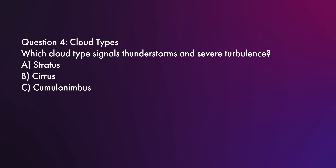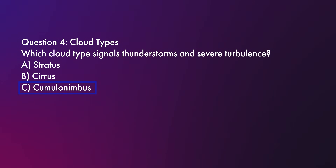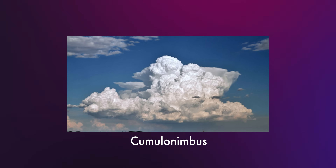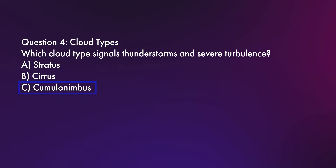Question four: What cloud type signals thunderstorms and severe turbulence? Is it A, stratus; B, cirrus; or C, cumulonimbus? The correct answer is C, cumulonimbus. Cumulonimbus clouds are tall, dense clouds often associated with thunderstorms, lightning, and turbulence — you don't want to be flying your drone near them. Stratus clouds are flat and generally signal overcast but stable weather. Cirrus clouds are thin and high in the sky, and they usually indicate fair weather.